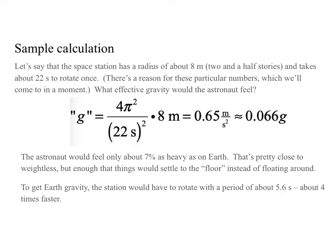Simple calculation: let's say the space station has a radius of about 8 meters — that's 2½ stories — and takes about 22 seconds to rotate once. What effective gravity would the astronaut feel? Well, g-effective is 4π² over 22² times 8 meters, which turns out to be 0.65 meters per second squared, or about 0.066 g. So this is definitely weak gravity — much weaker than even on the moon, which is 0.16 g, about a third of that, and about a sixteenth of that on Earth.